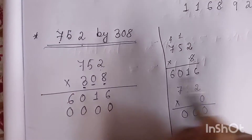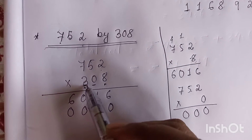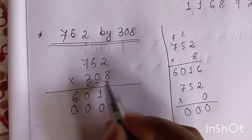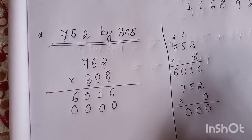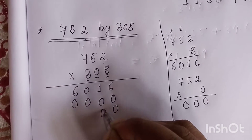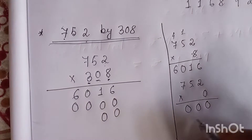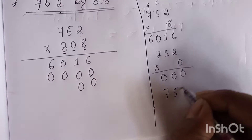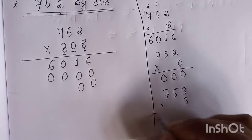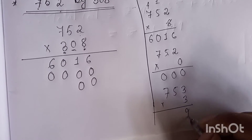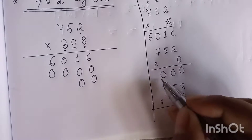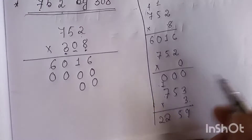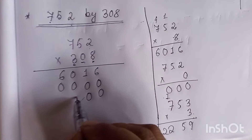Next, multiply by three, which is in the hundreds place. We leave the ones and tens places empty. Three twos are six. Three fives are fifteen — carry one. Three sevens are twenty-one, plus one, twenty-two. Since it is in the hundreds place, we start our answer from the hundreds place.